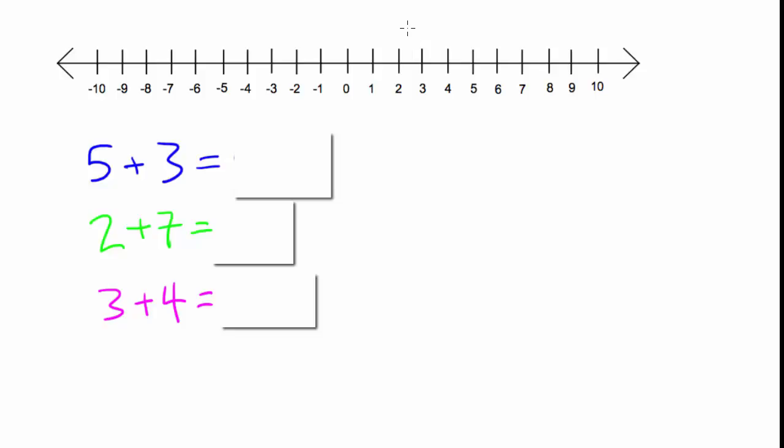Okay, you're probably familiar with the process of adding two positive numbers. So if we have five and then we add three, we're going to go three to the right. So that's one, two, three. So five plus three equals eight.